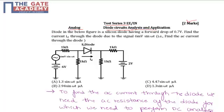The question states that the diode in the figure below is a silicon diode having a forward drop of 0.7 volts. We need to find out the ID through the diode due to the signal 6 millivolts sin omega t, that is, find the AC current through the diode.